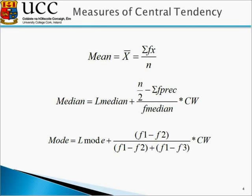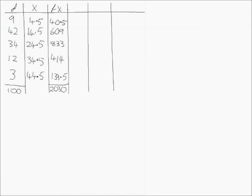The next value to calculate is the median. To find the median we need to identify the middle category using a cumulative frequency column — essentially the running total of the frequency column. The cumulative frequencies are 9, 51, 85, 97, and 100. The final value in the cumulative frequency column will always equal the total number of observations. With 100 observations, our middle value is 50, which lies below 51.